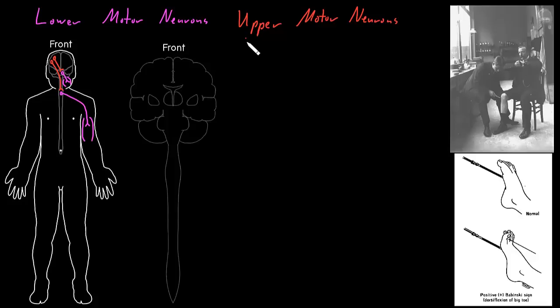We can divide up the upper motor neurons into different pathways or tracts depending on whether they go all the way down into the spinal cord to synapse on lower motor neurons, or a shorter distance to the brain stem to synapse on lower motor neurons. Let's first look at these longer upper motor neurons that send axons all the way down into the spinal cord.